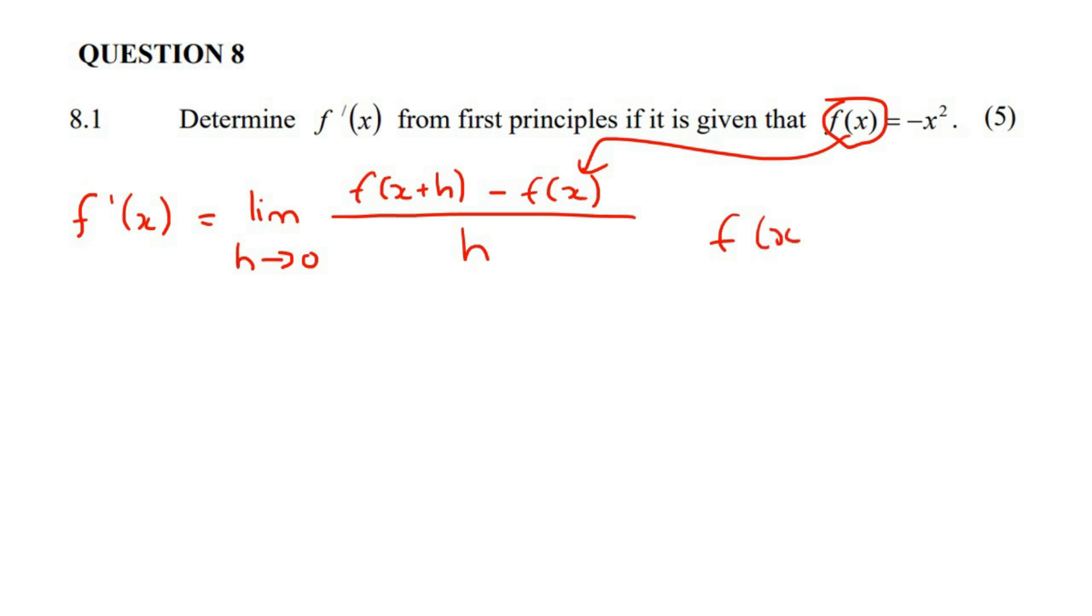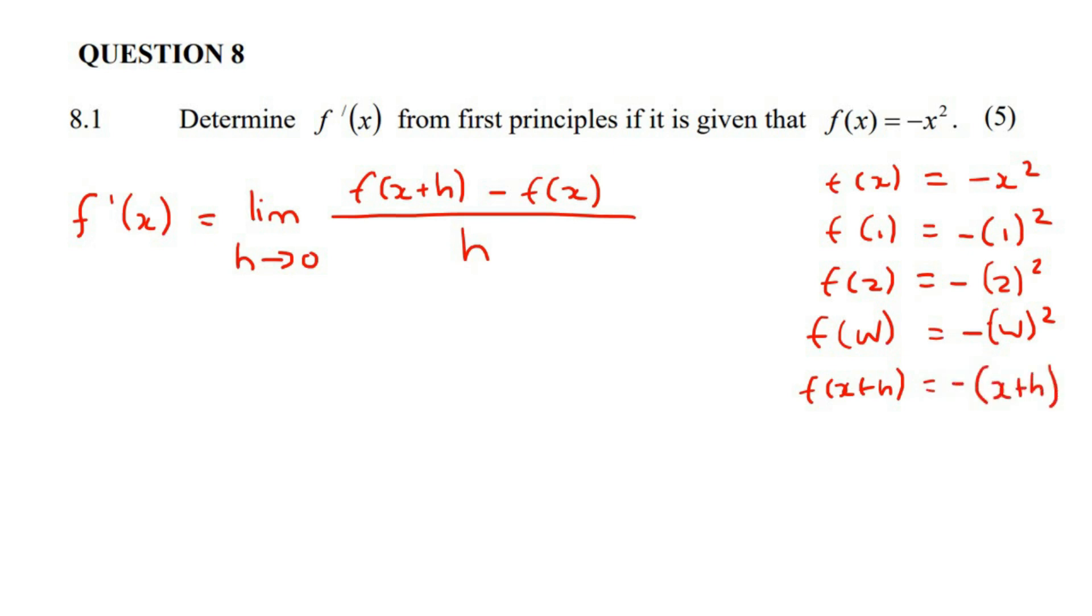So what that part tells you is you must take all of the x's that you see over here. So let's say we have f of x and that's negative x squared. So what would you say if I said f of 1? Well, you would replace all the x's with 1. If I said f of 2, you would replace all the x's with a 2. So what if I say f of w? Then you would replace all of the x's with a w. So what if I say f of x plus h? Then you must replace all of the x's with x plus h. So like that. And that is what you would put there.